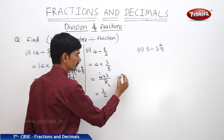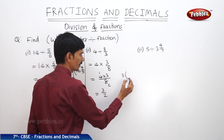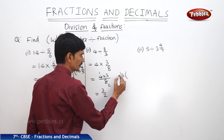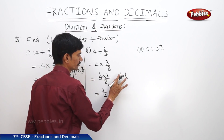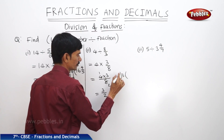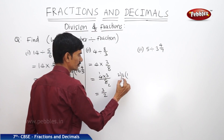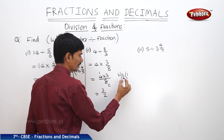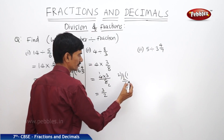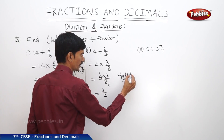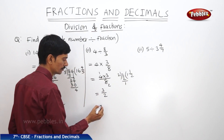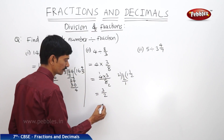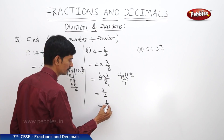We convert 3/2 into a mixed fraction by dividing 3 by 2. 2 goes into 3 once, with a remainder of 1. So this equals 1½.